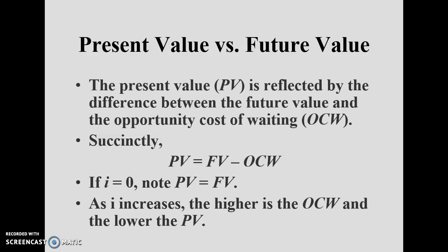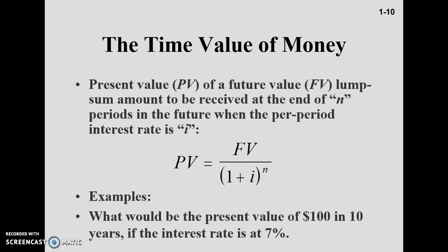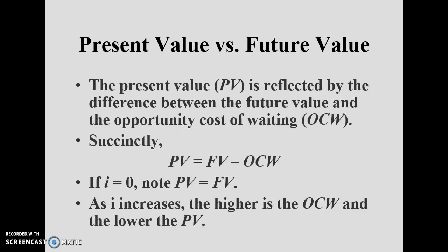If the interest rate equals zero, the opportunity cost of waiting equals zero: (1 + 0)^n = 1^10 = 1, so present value equals future value. Present value only differs from future value when the interest rate is greater than zero. If the interest rate increases, the opportunity cost of waiting is higher and the present value is lower.